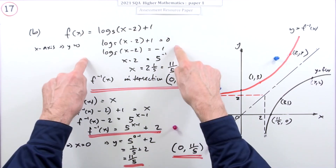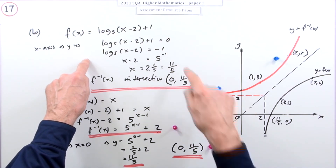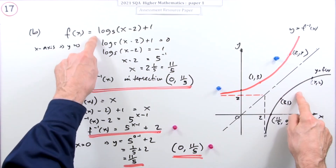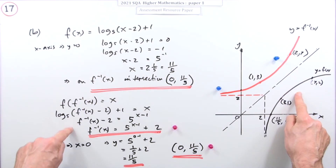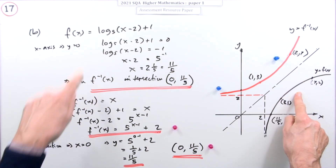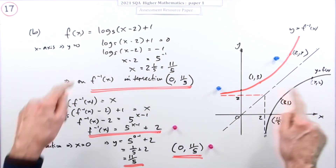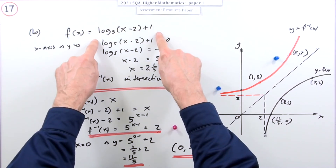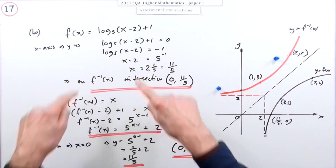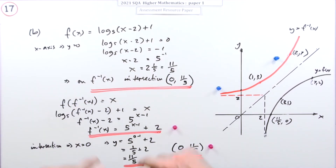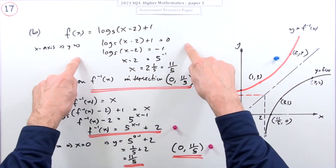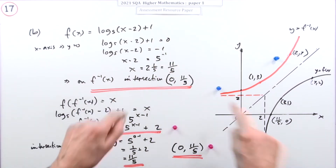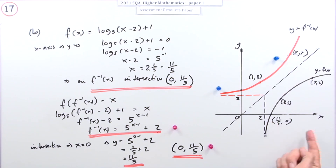It would be easier just to use the original function - you don't have to mess about rearranging - because you know that function is correct since it was given. Just use it to find the x-intercept and then flip the coordinates for the inverse.